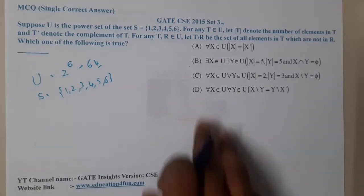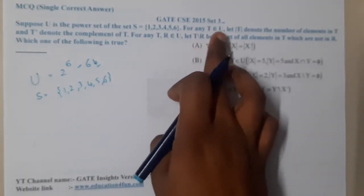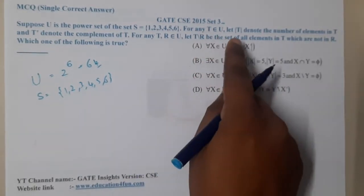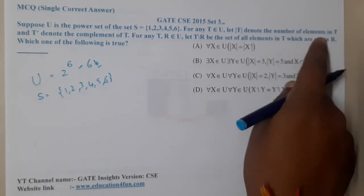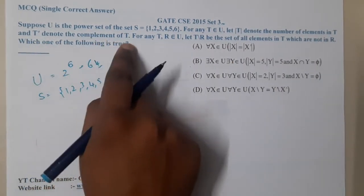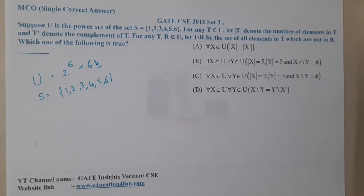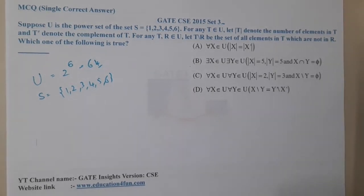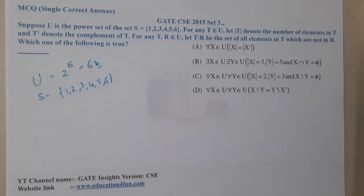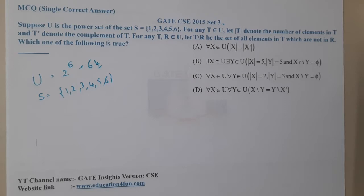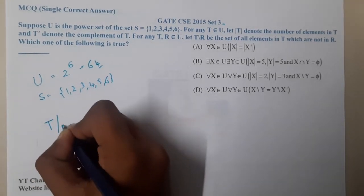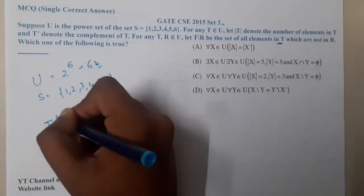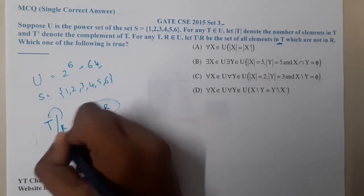For any t belonging to U, let |t| denote the number of elements in t, and t' denote the complement of t. For any t, r belonging to U, let t/r be the set of all elements in t which are not in r — which is nothing but t minus r in traditional set notation.